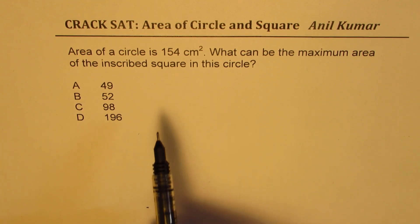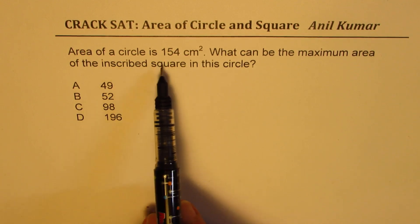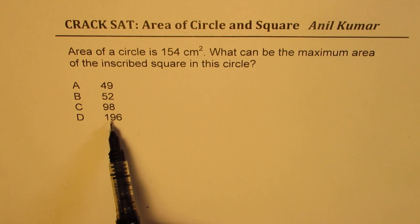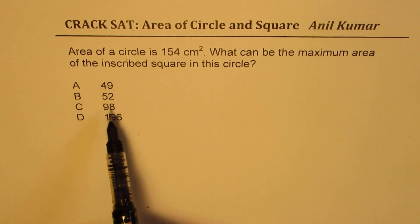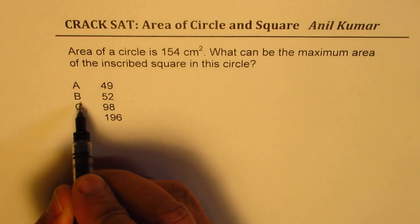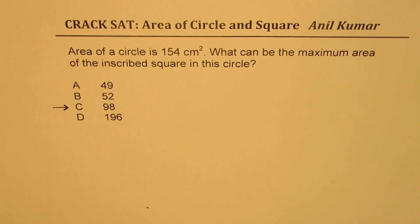Now, first choice is you can do trial and error. 154 is the area of circle. Inscribed circle means less than 154, so 196 is out, and area of circle and area of square when you're comparing, it has to be more than half at least. So 98 becomes a good choice.